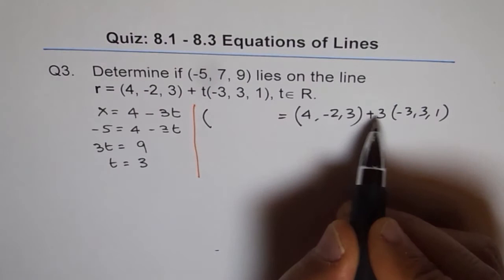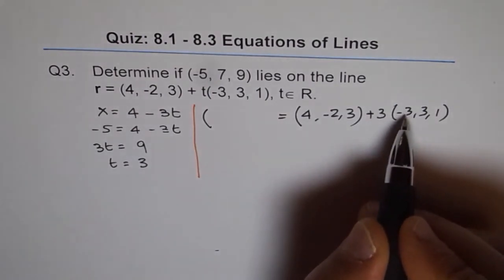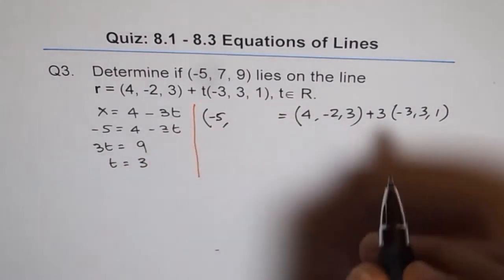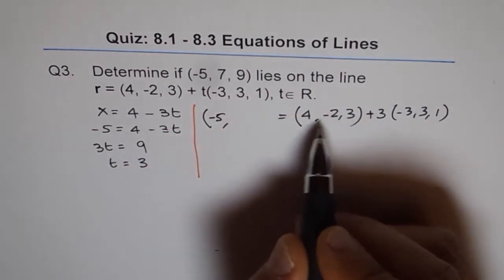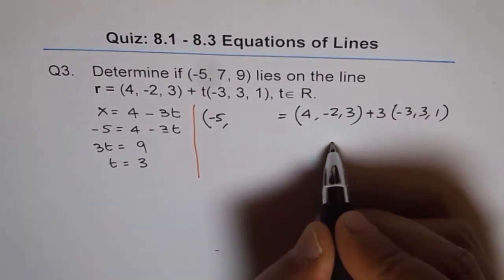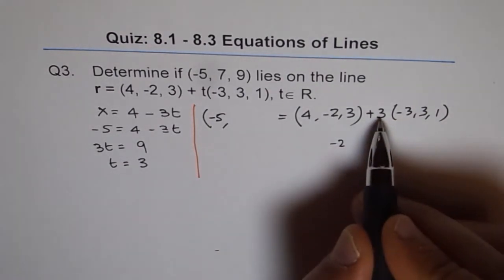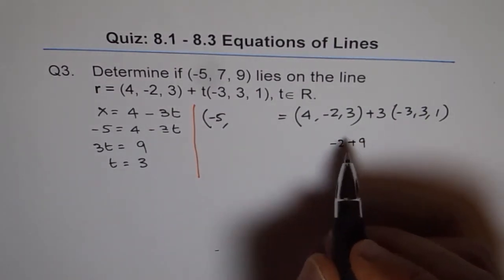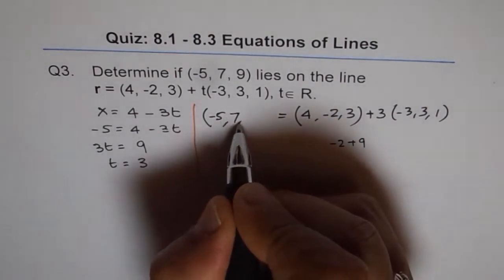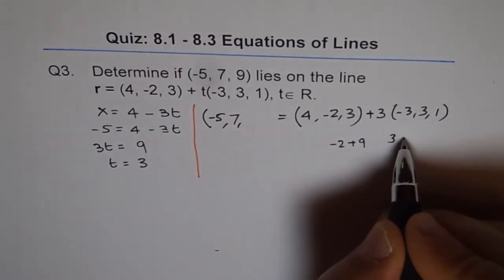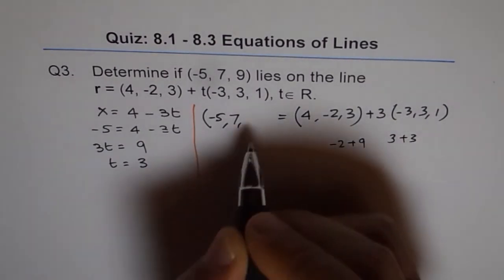So 4 plus -9 is -5, so that's the first value, that's correct. Now, -2 and then 3 times 3 is 9 so -2 plus 9 is 7, we get 7 here. And for z value we get 3 from here and 3 times 1 is plus 3 which is 6.